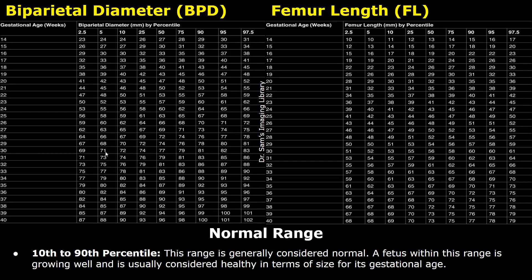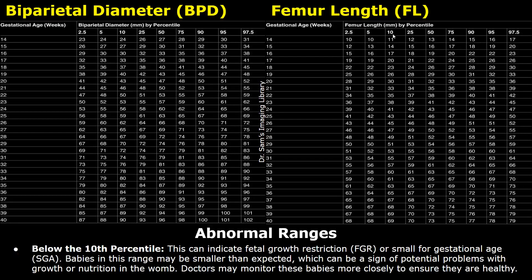The main thing to understand is which measurements are considered normal and which are considered abnormal. Measurements that fall in the 10th to 90th percentiles are considered normal. Measurements that fall below the 10th percentile are considered abnormally short — the values in the 2.5th and 5th percentiles are considered short or small for gestational age.